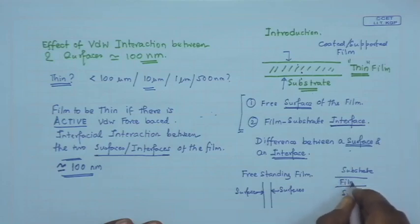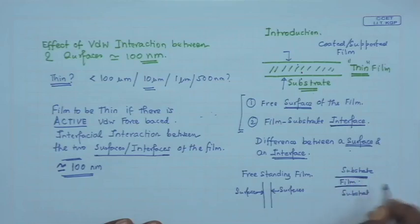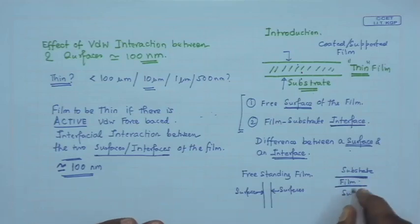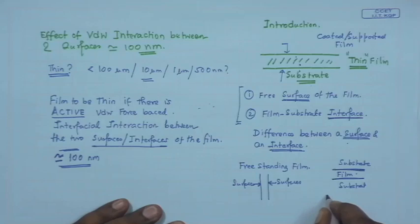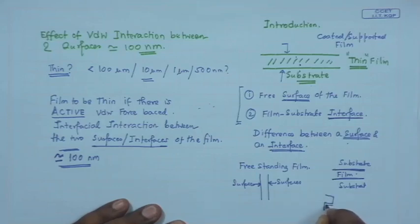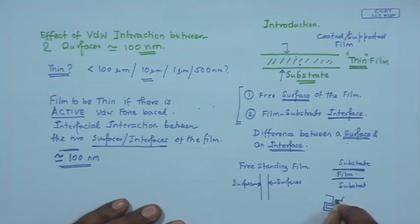Or you can have a film sandwiched between two solids — it can be liquid or another solid. Such a film has two interfaces. An example of this type of film is lubricating oil in a gear, which forms films sandwiched between two solid surfaces.